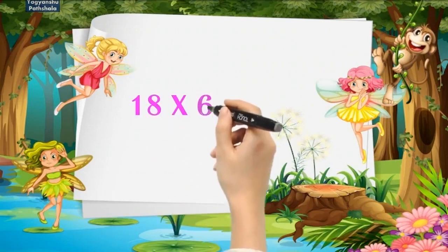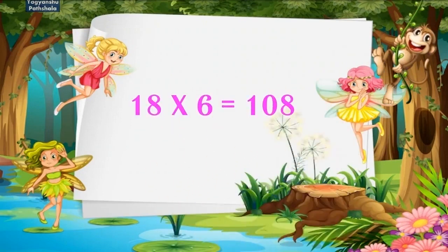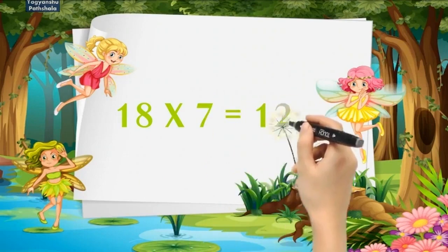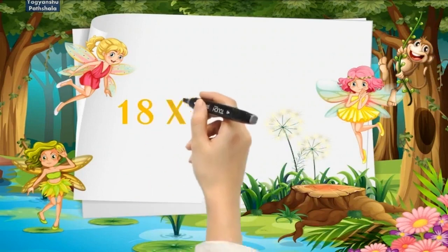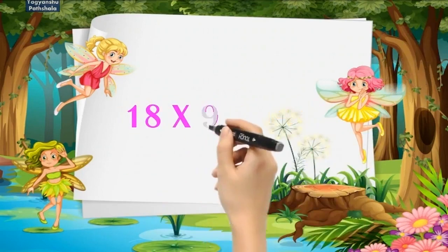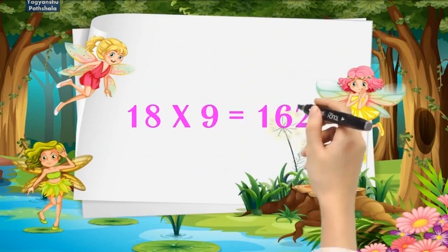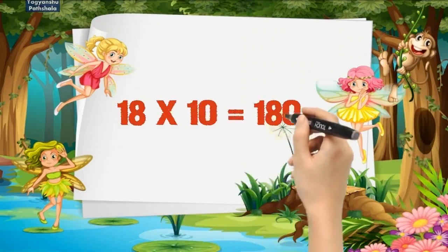18 times 6 is 108. 18 times 7 is 126. 18 times 8 is 144. 18 times 9 is 162. 18 times 10 is 180.